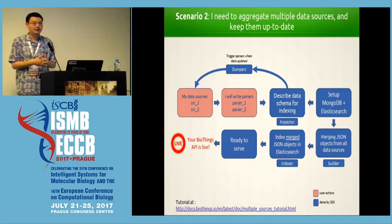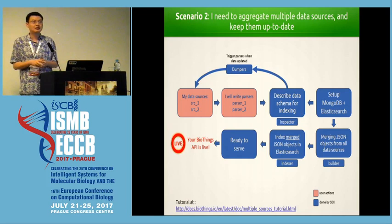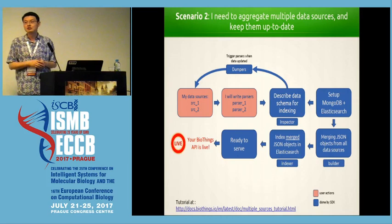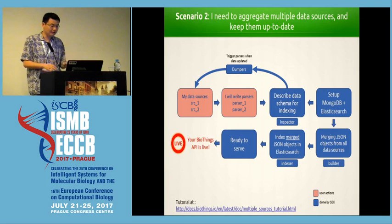The second scenario is a bit more complicated because you may need to aggregate resources from source one and source two. You still write all the parsers, and we have a component called dumpers that monitors all the resources and triggers the parser when new resources are available. We also use MongoDB as a staging storage before sending data to Elasticsearch. Everything else remains the same.